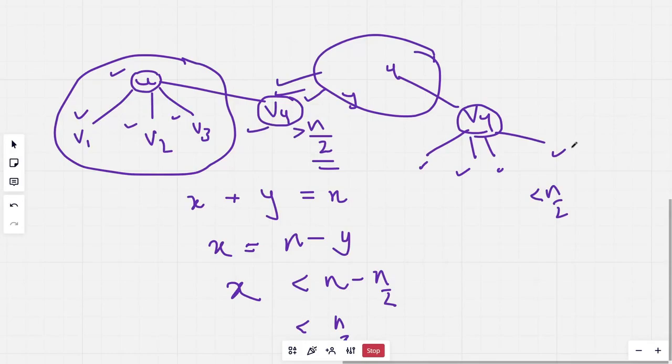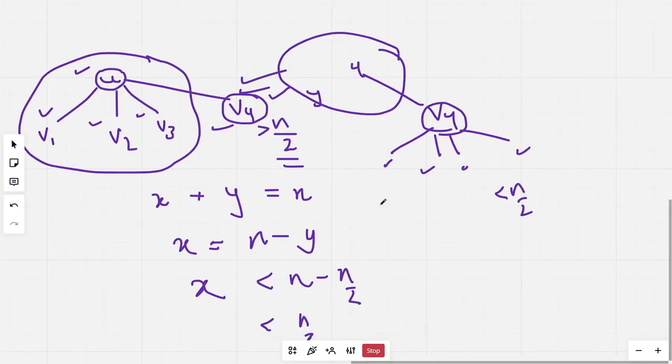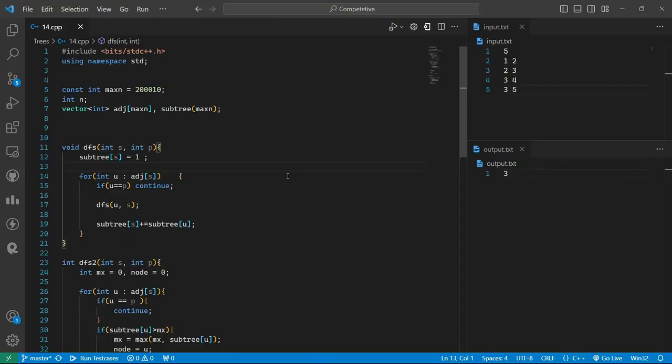Otherwise, we will do what we did previously for some child of v4 until we find a centroid. So for this problem we will be needing two depth-first search passes to calculate the subtree sizes, and then to find the centroid. Both of these take big O of n time complexity, so the total would be big O of n.